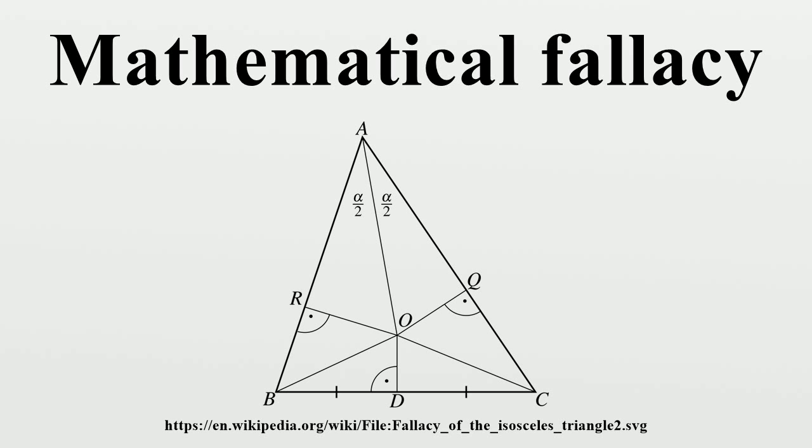The fallacy in this proof arises in line 3. For n equals 1, the two groups of horses have n minus 1 equals 0 horses in common, and thus are not necessarily the same color as each other. So the group of n plus 1 equals 2 horses is not necessarily all of the same color. The implication, every n horses are of the same color, then n plus 1 horses are of the same color, works for any n greater than 1, but fails to be true when n equals 1.